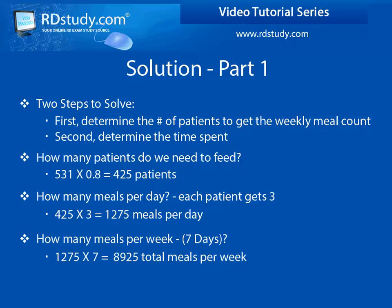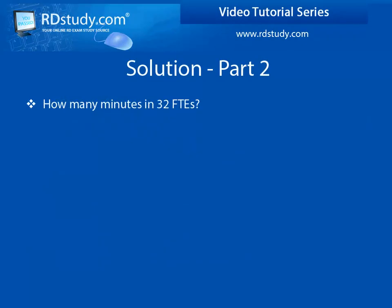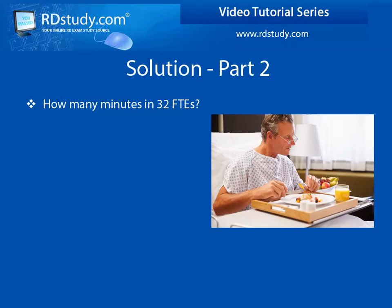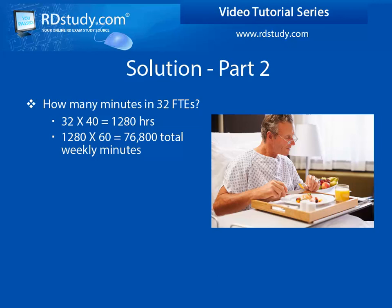We have our first needed value. Now we need to determine how much time, ultimately in minutes, 32 FTEs represents. 32 times 40 hours within a week equals 1,280 total hours worked, times 60 minutes per hour equals 76,800 total minutes worked per week.